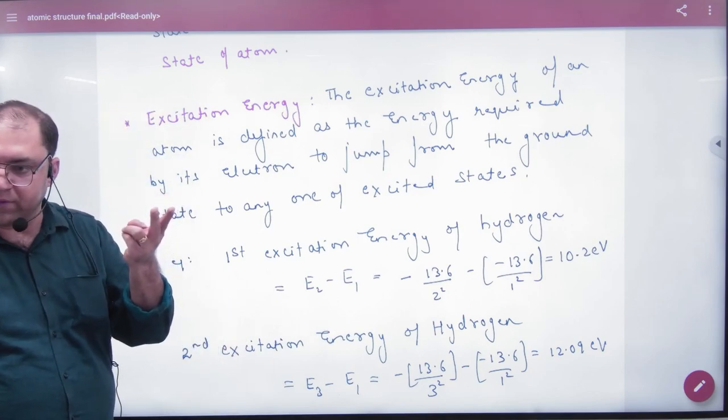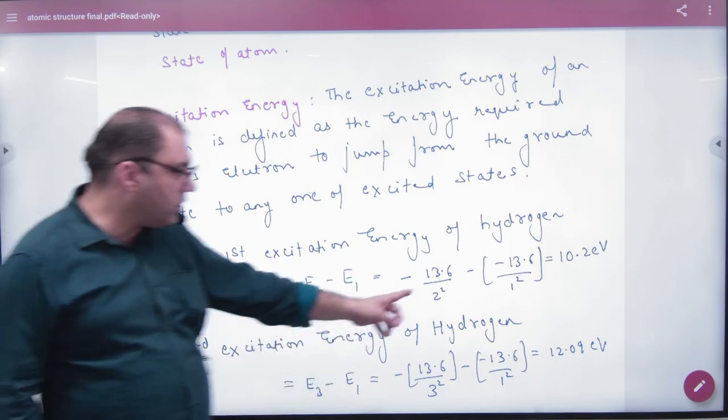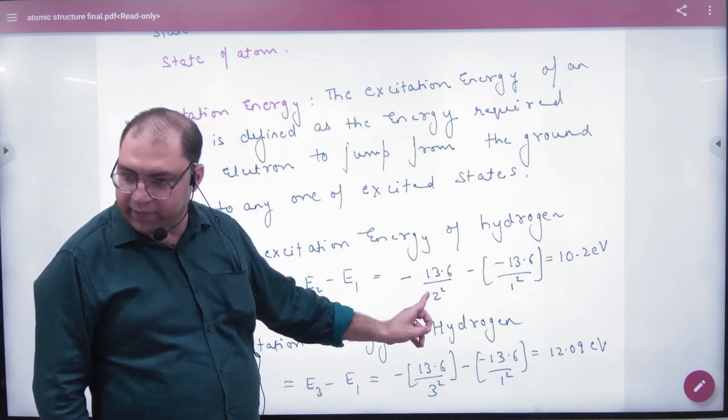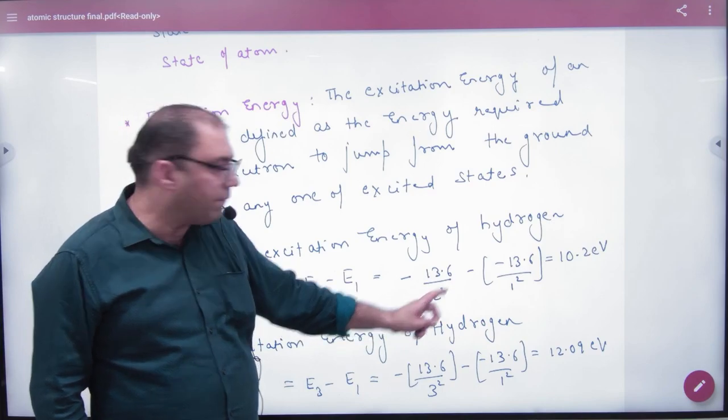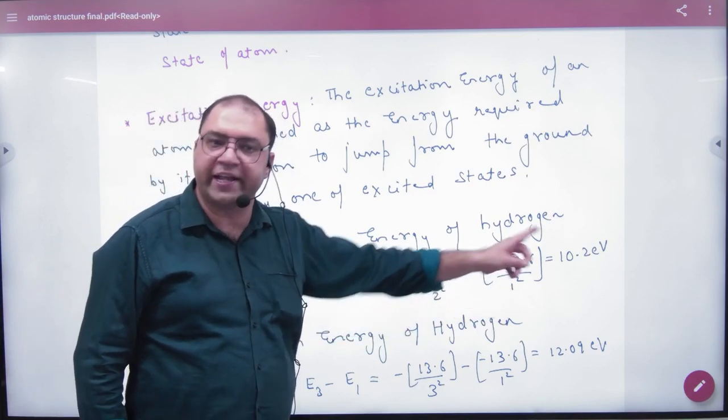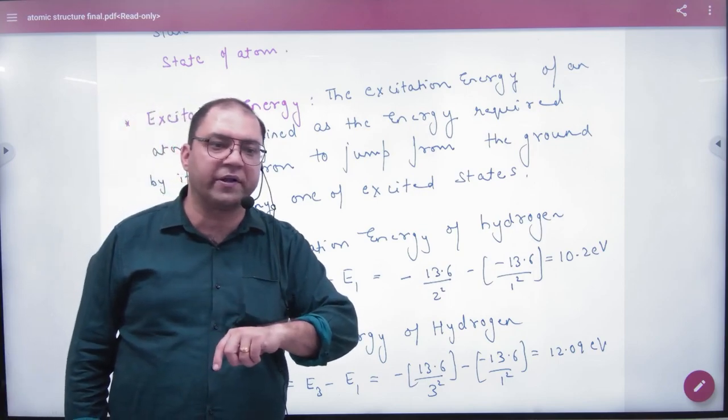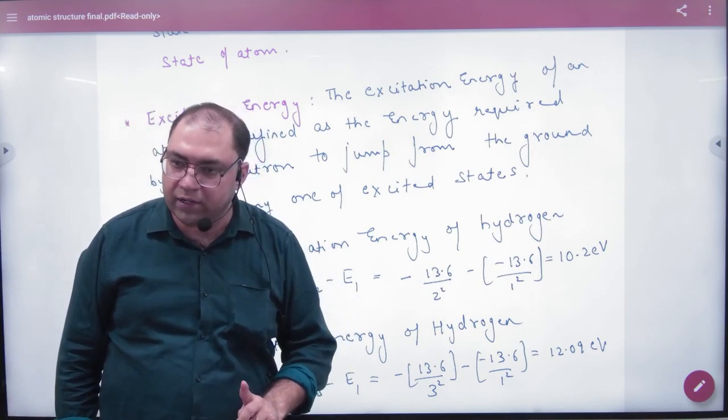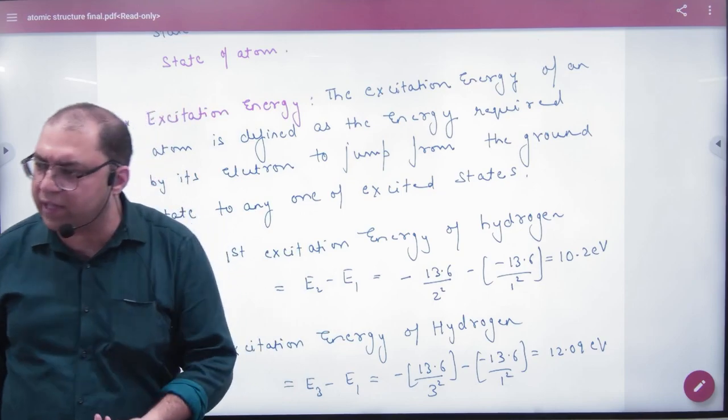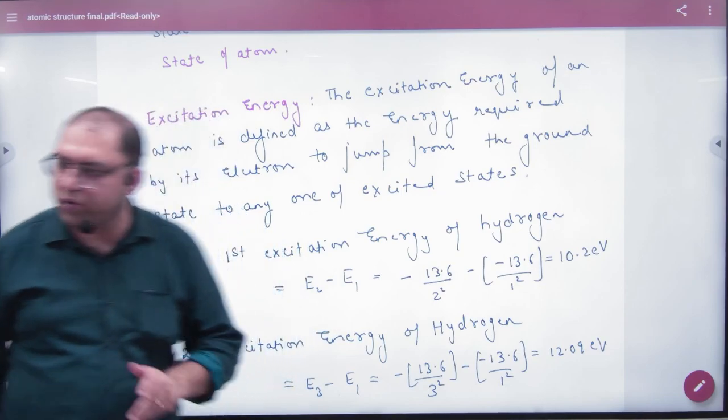For n equals 2, first excitation, what will be the energy? Final energy minus 13.6 by 2 squared minus initial energy, which is 10.2. In numericals, this figure, 10.2, is sometimes directly used in objectives because it knows that the student has practiced. So the first transition is 10.2 electron volts.